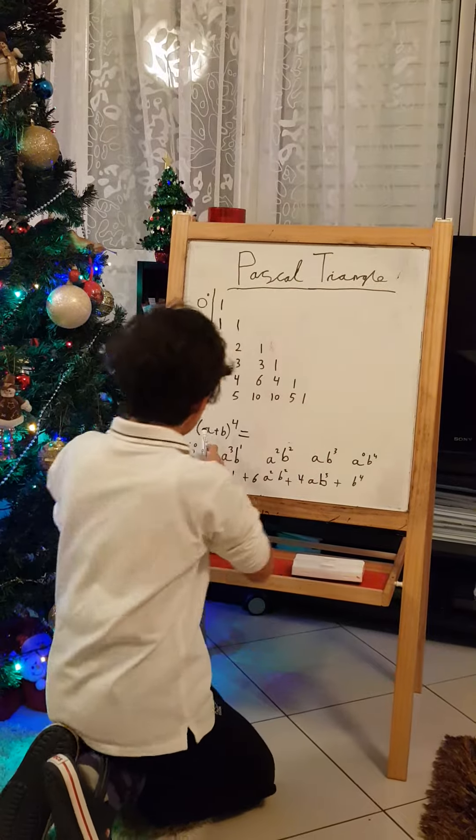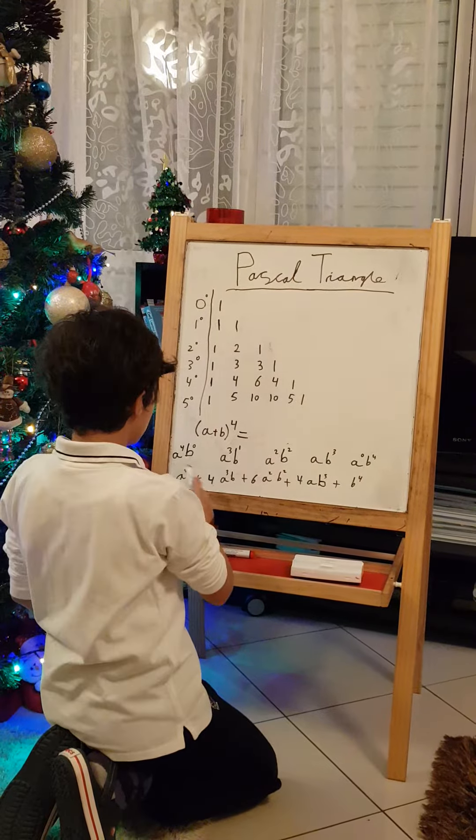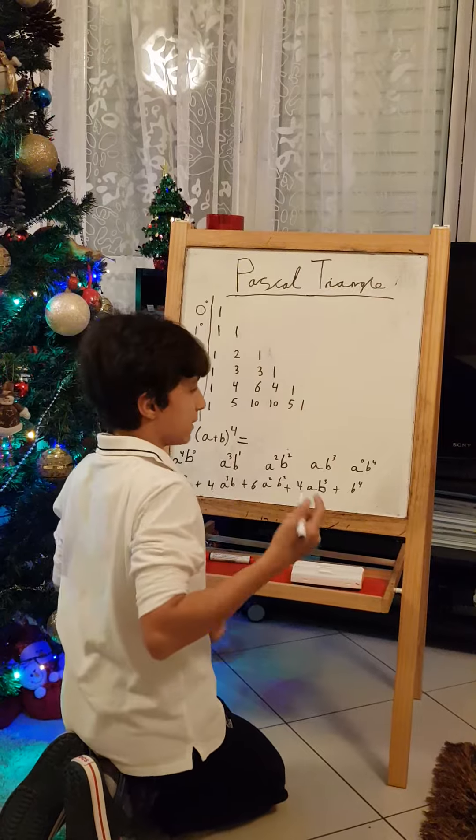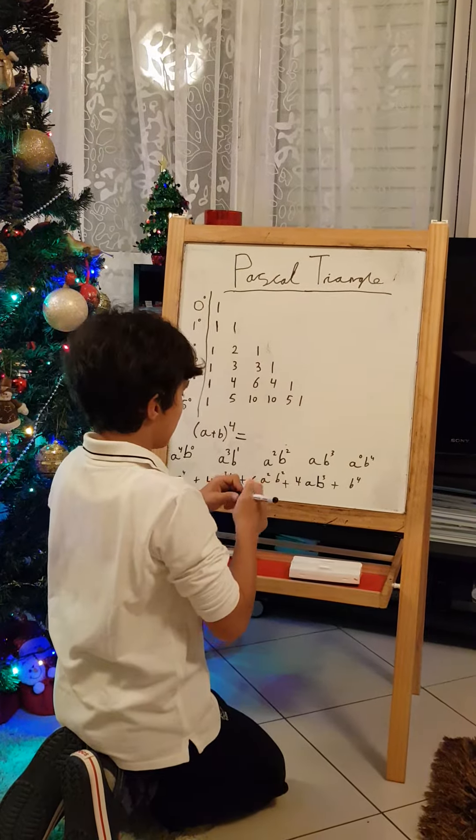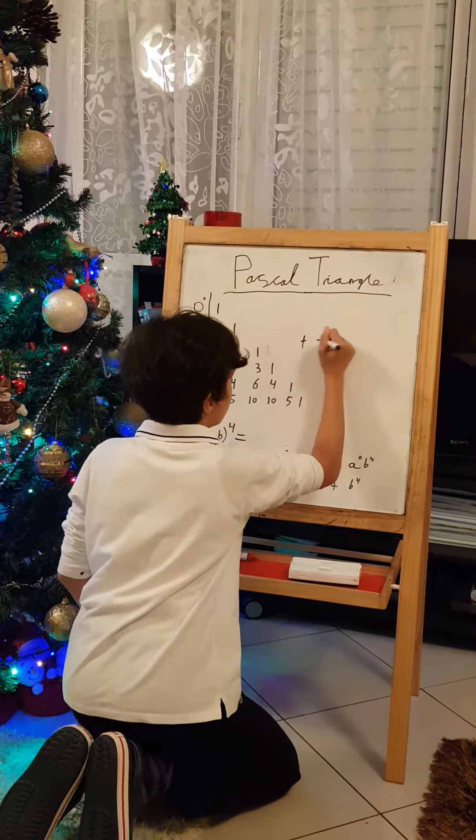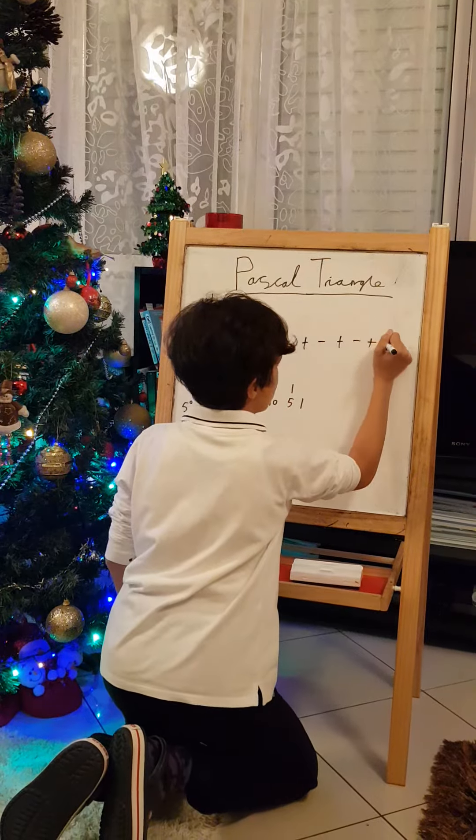Now, the signs. Because it's positive, we just put positive for the whole equation. If it's negative, you put like this: plus, minus, plus, minus, plus, minus, and so on.